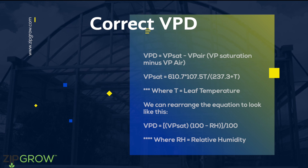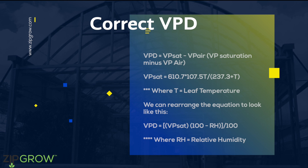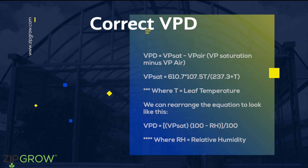VPD is a function of temperature and humidity. By subtracting the air vapor pressure, or Vp actual, from the saturated vapor pressure, or SVP, you get the vapor pressure deficit. Calculations of SVP and Vp actual can be found in the link below to our blog post on VPD.